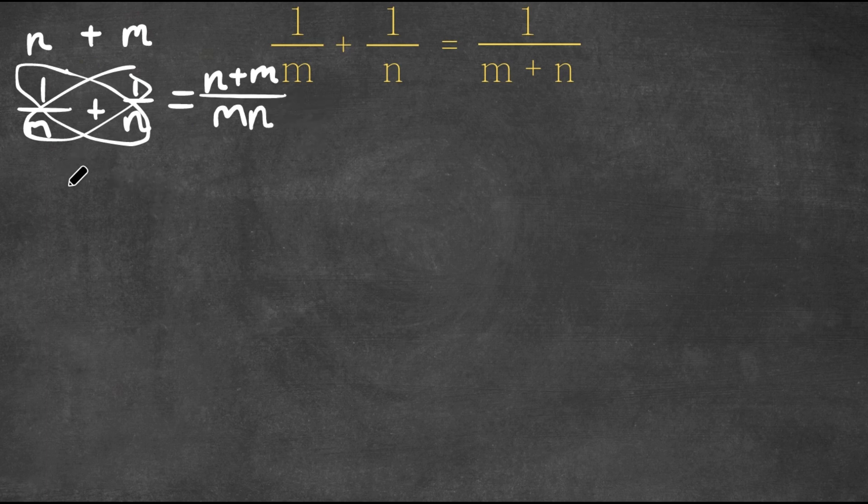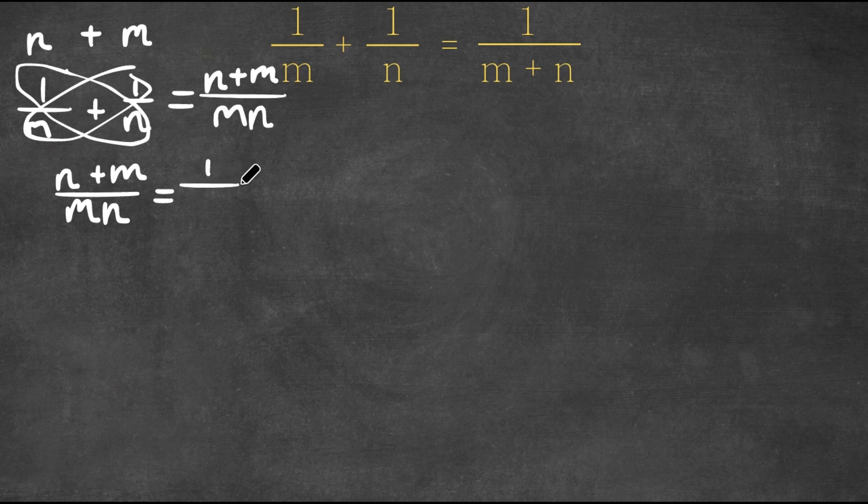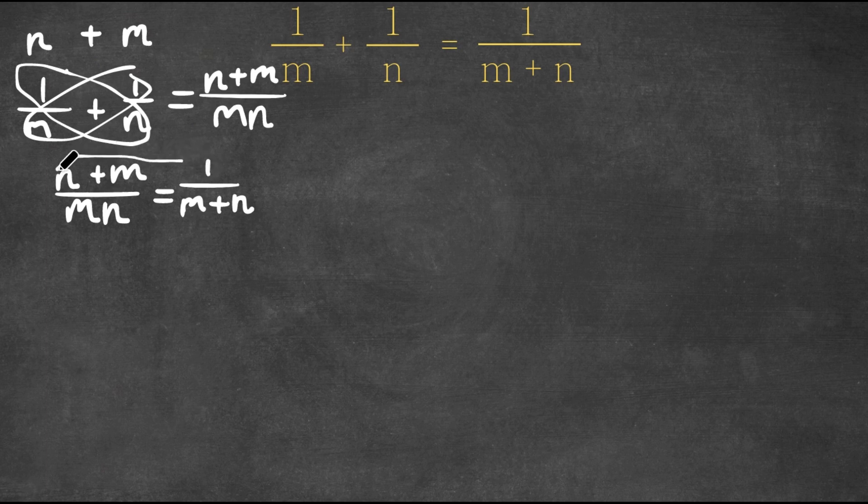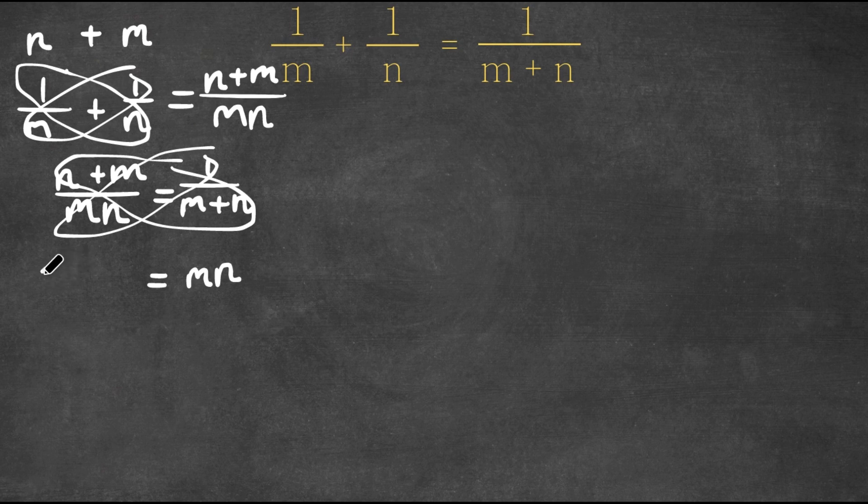So now we have n plus m over m times n is equal to 1 over m plus n. So now I'm going to cross multiply once again because we have another equation here. If I do that, we get m n times 1 is simply just m n. This is equal to n plus m times m plus n, which is simply just m plus n squared.